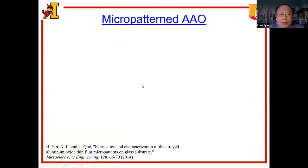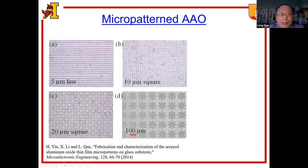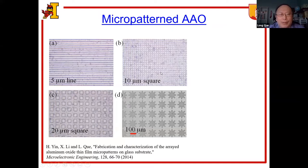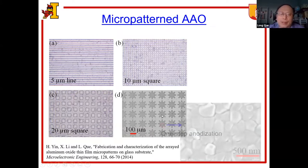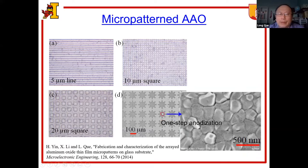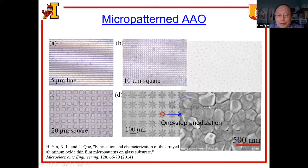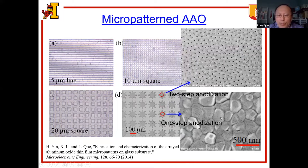Using this kind of fabrication process, we can fabricate micropatterned AAO with different shapes — for example, micro line, micro square, and even other micro patterns on chip. If we look at the surface of the AAO patterns using a one-step anodization process, we can clearly see the nanoscale domains of the AAO thin film, and in each nanoscale domain, we can see the nanopores inside the film. If we use a two-step anodization process, we can eliminate the nanoscale domains, and we can see the nanopores distributed in the thin film.